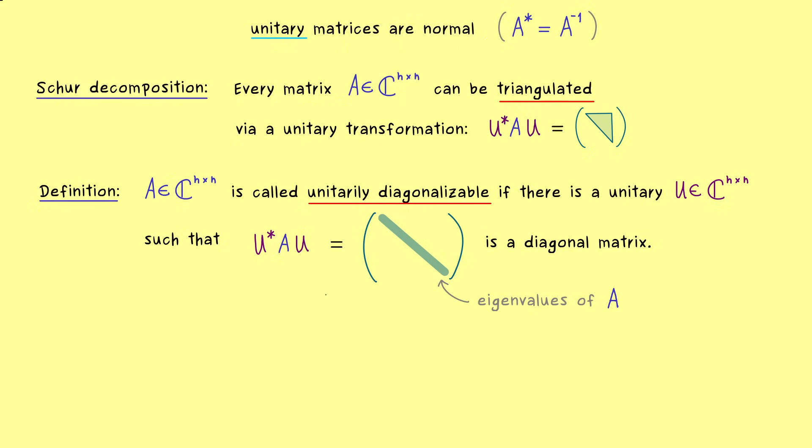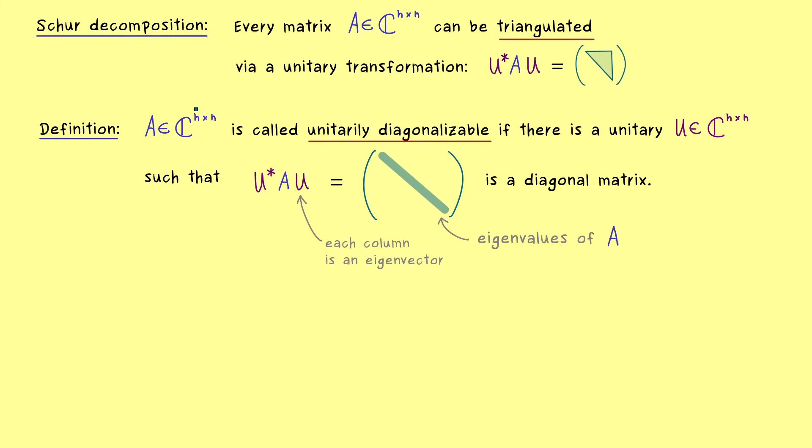Indeed the eigenvalues cannot change under such a transformation and therefore we find them again on the right hand side. Moreover this also means that inside the matrix U the columns form eigenvectors for the matrix A. This is really easy to see just by multiplying with U and cancelling this U star and bringing U to the right hand side. Moreover since a unitary matrix has an ONB of ℂⁿ in its columns we also see that a unitarily diagonalizable matrix necessarily has eigenvectors that form an ONB of ℂⁿ as well. This means this is already a restrictive term because not all matrices satisfy this.